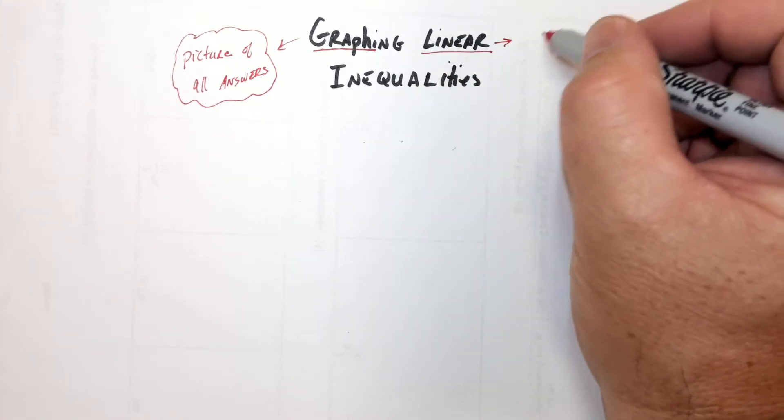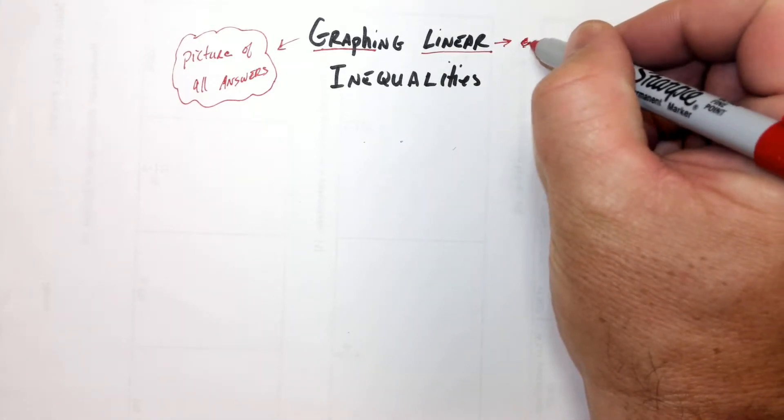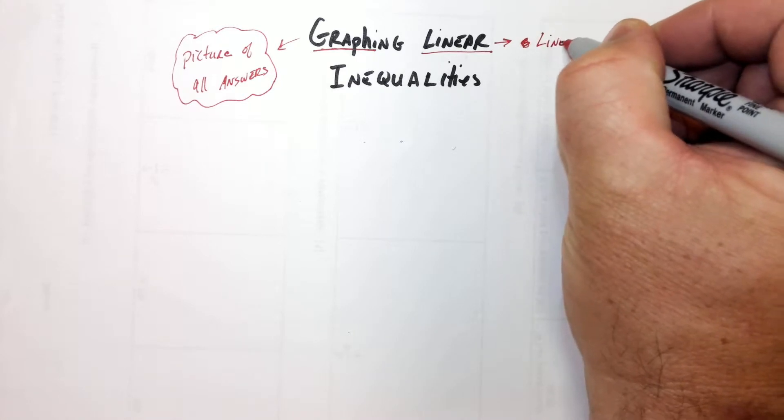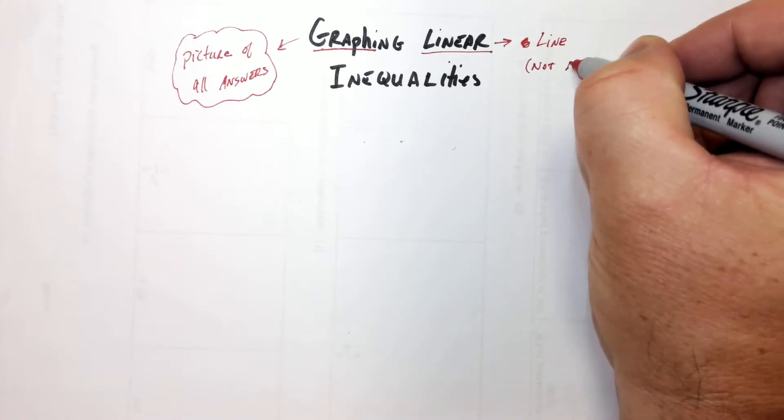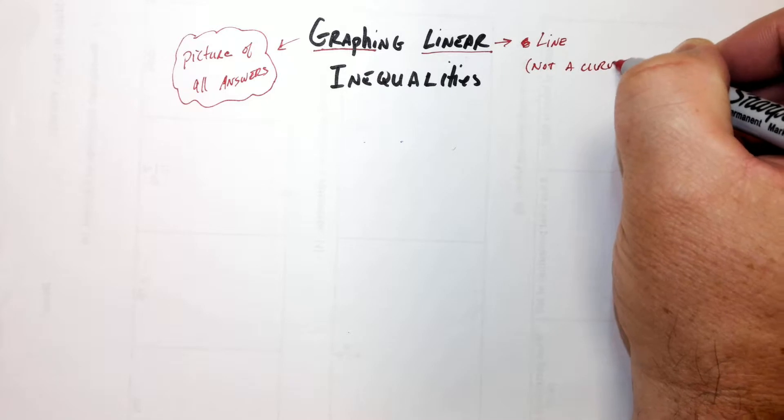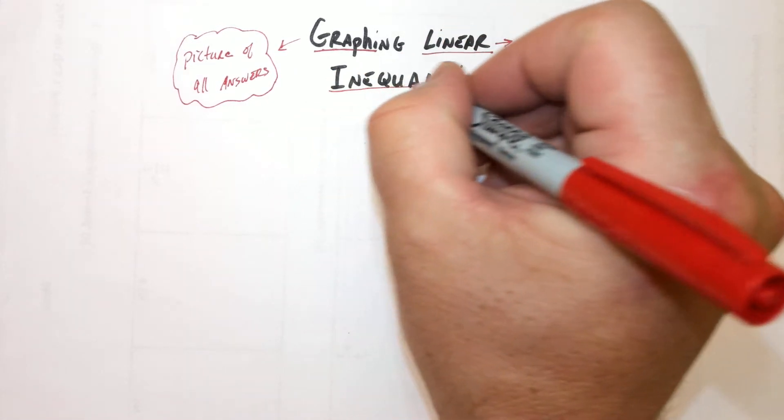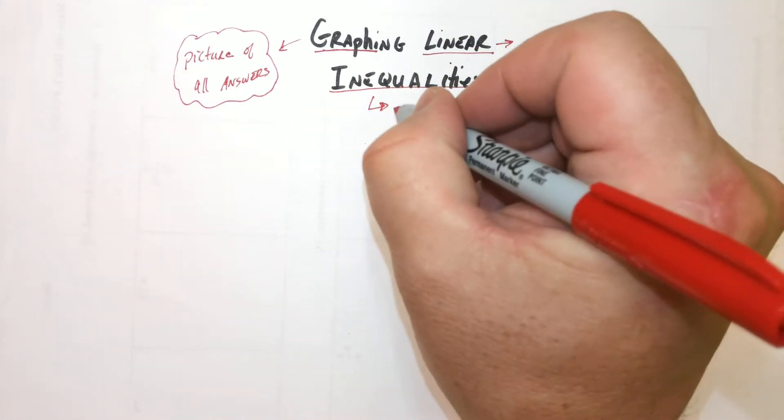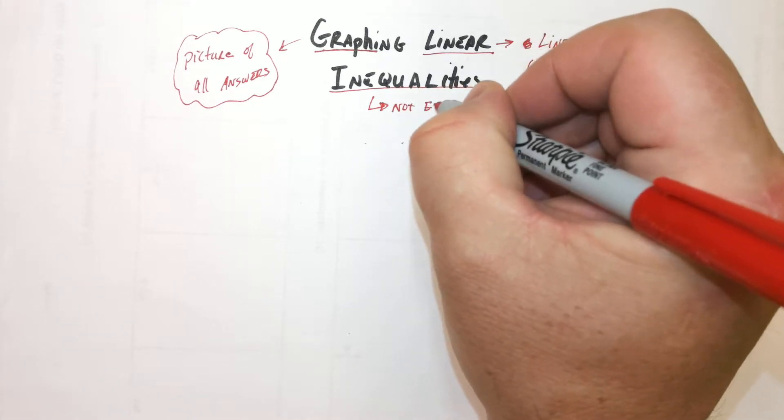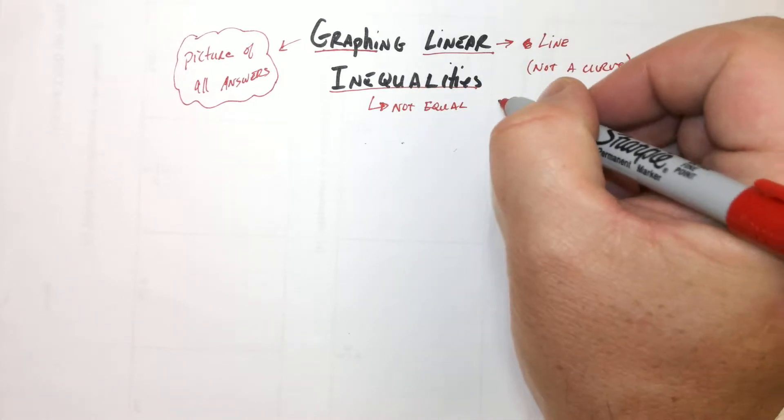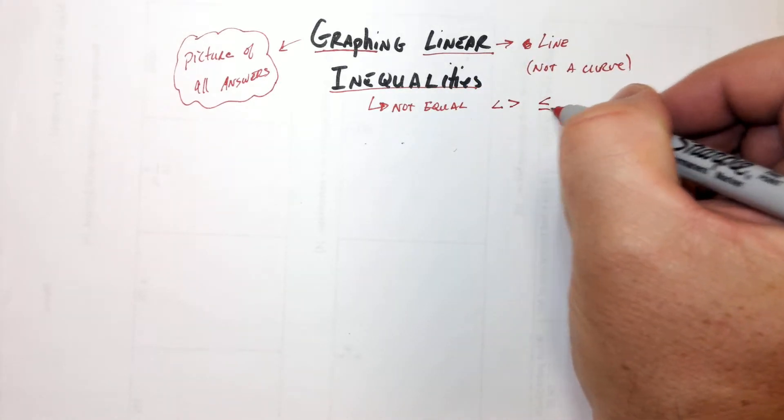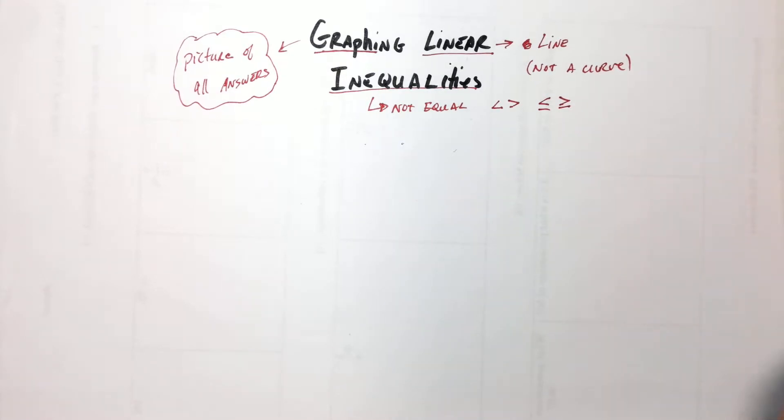Linear means a straight line, which is redundant. All lines are straight. So it's a line, not a curve. And inequalities are not equal. It's a line. Those are what we're going to be doing.